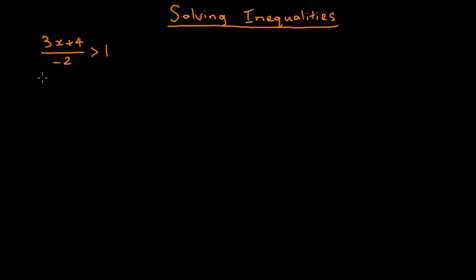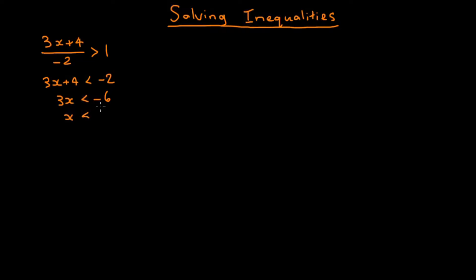So if we do that, on the left-hand side we get 3x + 4 is less than 1 times minus 2, which is minus 2. Then subtracting 4 from both sides we get 3x is less than minus 6. And then dividing by 3 we get x is less than minus 2. And that's our answer.